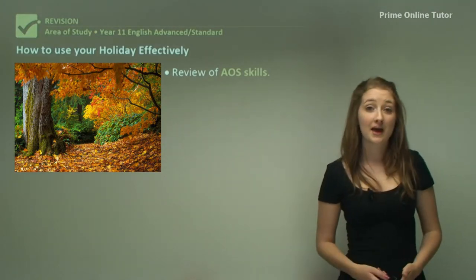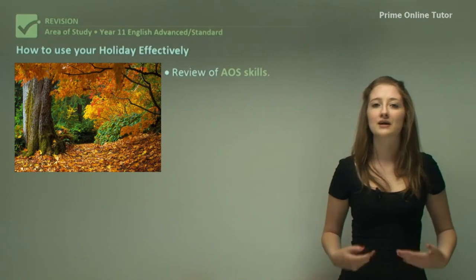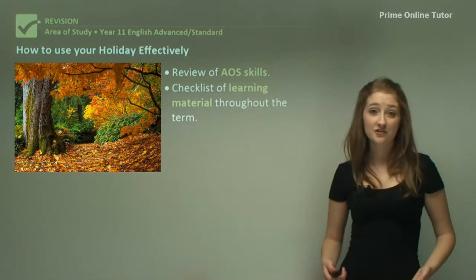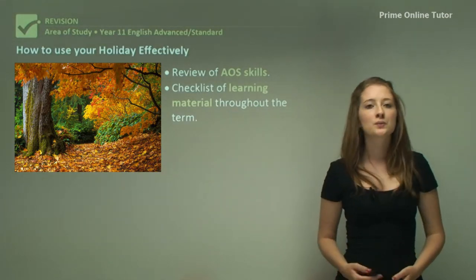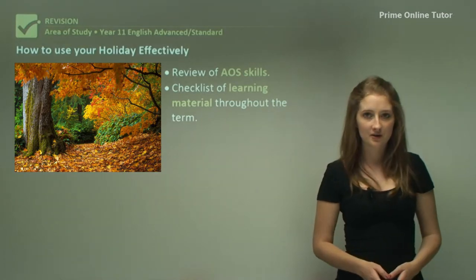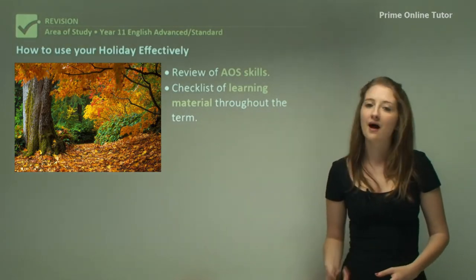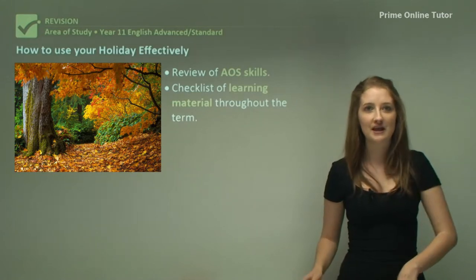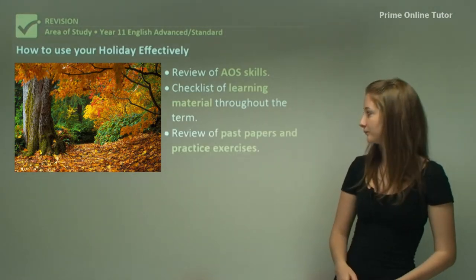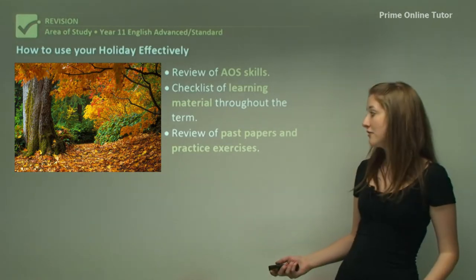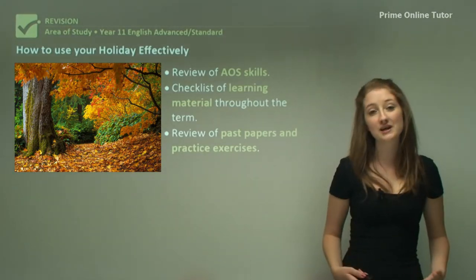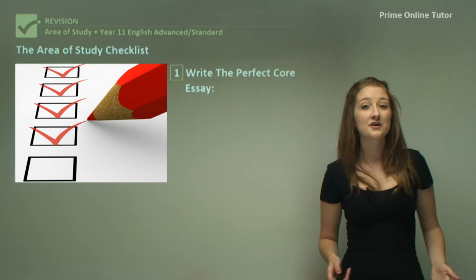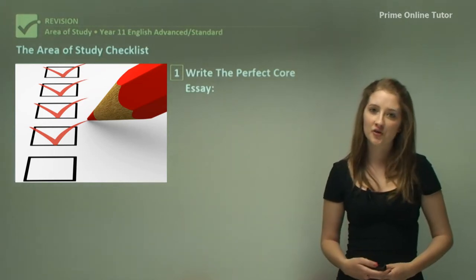We'll therefore review area of study skills to ensure that you have a continual reference point for reviewing area of study throughout your year. This checklist of learning material will provide a way for you to continually look over your area of study while you're perhaps moving on with other modules in English, because it's really important to continually go over old content instead of only focusing on new content. This will include a review of past papers and practice exercises in order to achieve good results in your English exam. The area of study checklist will provide you with direction for your revision program.